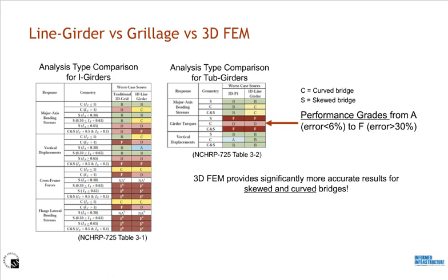Here is a comparison between the three analysis types we just covered, with data taken from NCHRP 725 report. This report focuses on curved and skewed bridges, with line girder and grillage analysis performance presented relative to 3D FEM analysis results. As you can see from the table on the left for I-girders, cross-frame and flange lateral bending approximations are very poor compared to 3D FEM. And in the table on the right for tub girders, torsional behavior approximated by line girder and grillage analysis is very poor compared to 3D FEM analysis results.